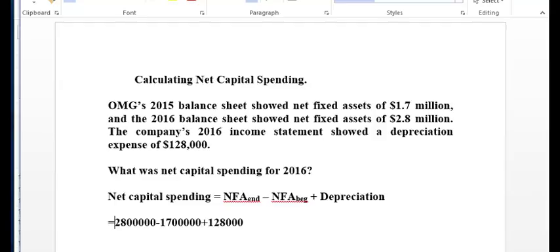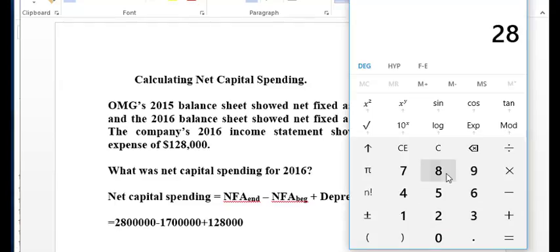So we take $2.8 million minus $1,700,000, plus $128,000.